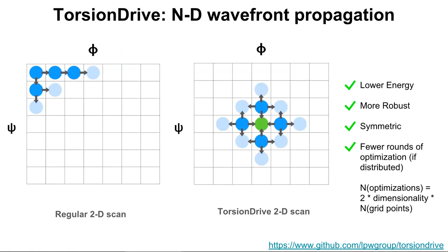In wavefront propagation, you start with an initial point, launch optimizations at all nearest-neighbor grid points, and repeat the cycle. You may start new optimizations at grid points where you already have minimized energies, potentially picking up new local minima with different initial conditions. The advantages are that you end up with lower-energy structures in general and the result is more robust — you're guaranteed a certain potential surface regardless of scan direction or leading/trailing dimension choice.